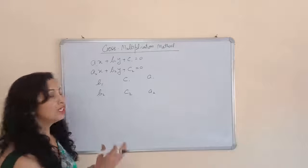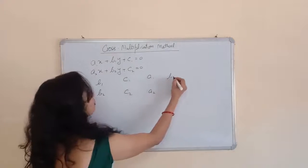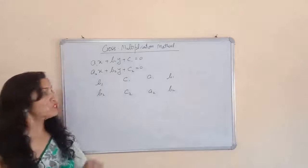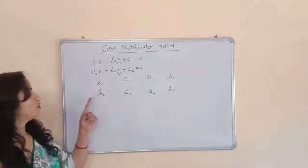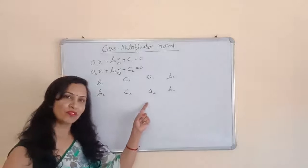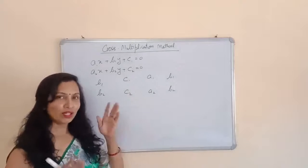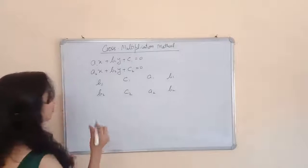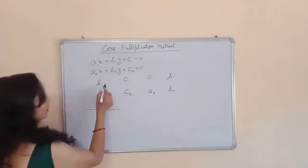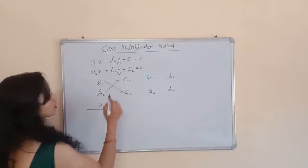Again repeat the coefficient of y — b1 and b2. So first you will write the coefficient of y, then the constant value, then the coefficient of x, and then again the coefficient of y. For this method, you will write x upon this into this minus this into this.